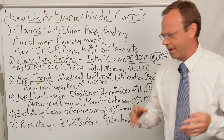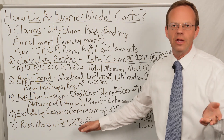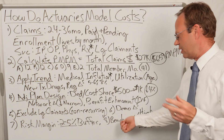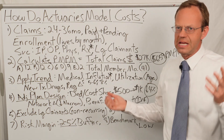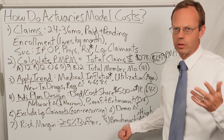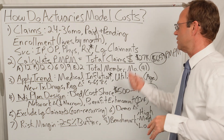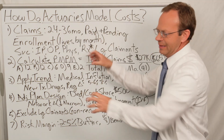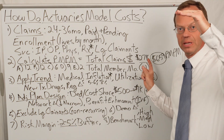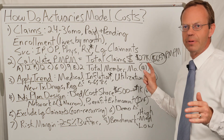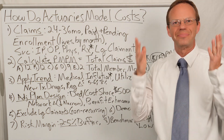Finally, the actuary puts on a risk margin — a 2–5% buffer — because this is still a projection, an educated guess. Then they compare it to other similar groups from the past using their benchmarking tables and historical data that individual employers typically don't have. The actuary gives you a high, medium, and low range for that PMPM. That magical per member per month number — there might be three of them — is the final output. And now you know how they get there.